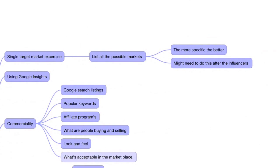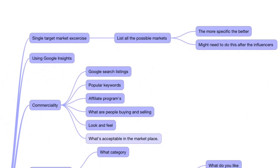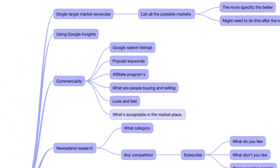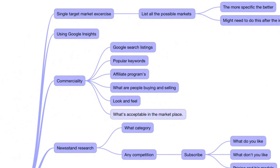I think about listing all the possible markets, and then the more specific, the better. I've made a note here that you might need to do that after you've been in the market a little bit. Because I know Magic the Gathering a bit, I could do this exercise right now. But if I didn't know my market well enough, I would have to do that after the influencer exercise. This is my mind map — I want you to understand this is the way I start to think about things.